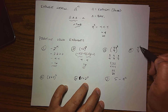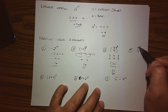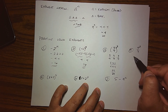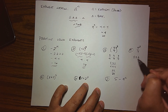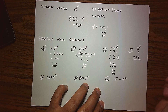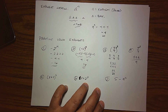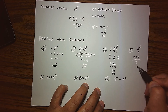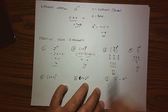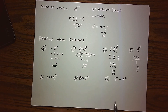Number 4 is very similar, but the exponent 3 is on top of only the 3 in the numerator. So the only thing serving as the base is the 3. When we do this, we multiply 3 by itself three times and leave the 4 in the denominator. Of course, 3 times 3 times 3 is 27, so the answer is 27 over 4. These are very different answers based on who is working as the base.